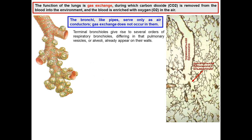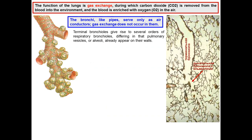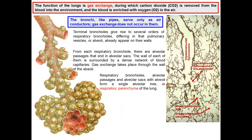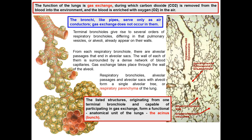Gas exchange does not occur in the bronchi. Terminal bronchioles give rise to several orders of respiratory bronchioles, on which pulmonary vesicles or alveoli already appear. From each respiratory bronchiole there are alveolar passages that end in alveolar sacs. The wall of each is surrounded by a dense network of blood capillaries where gas exchange takes place. Respiratory bronchioles, alveolar passages, and alveolar sacs with alveoli form a single alveolar tree — the respiratory parenchyma of the lung. The structures originating from terminal bronchioles form a functional anatomical unit called the acinus. Acini are separated by thin layers of connective tissue, and about 12 to 18 acini form a pulmonary lobule.